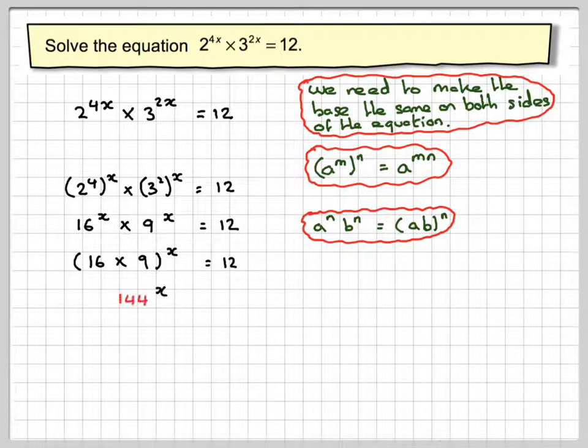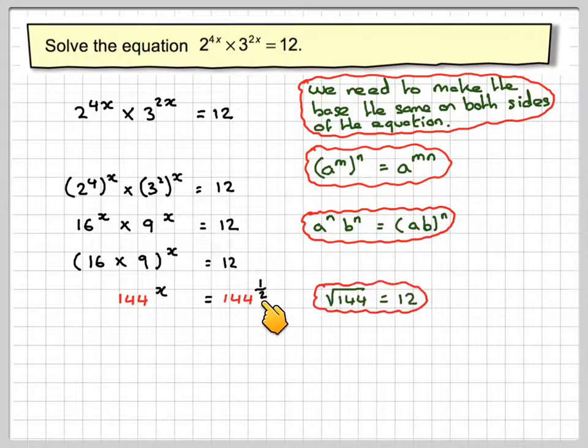Now 16 times 9 is 144 to the x. Now 12 is the square root of 144, so we can rewrite this side as 144 to the power of half, because the square root of 144 is equal to 12.